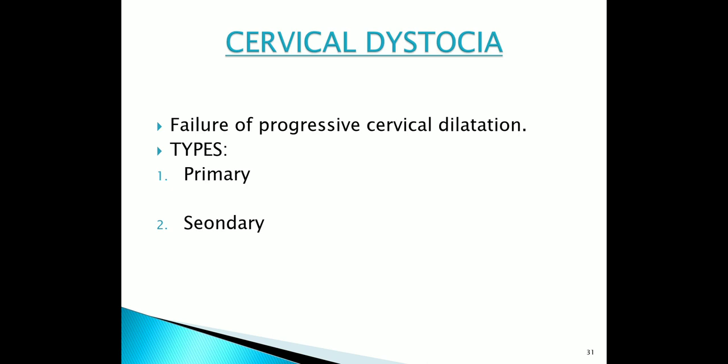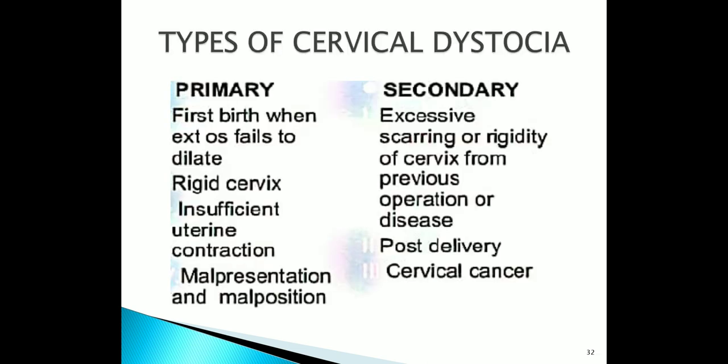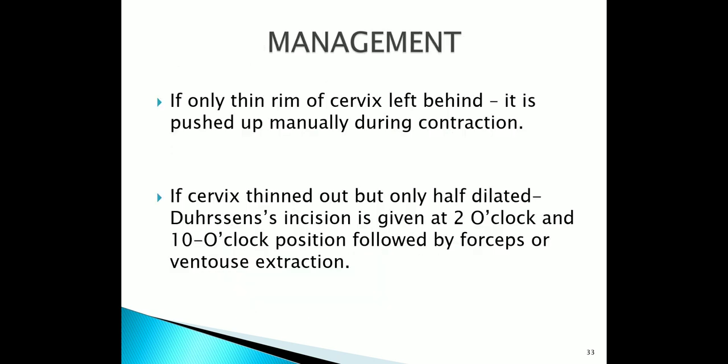Now come to cervical dystocia. Cervical dystocia means failure of progressive cervical dilatation. It is mainly of two types: primary cervical dystocia and secondary cervical dystocia. Primary cervical dystocia may be due to a rigid cervix where external forces fail to dilate, inefficient uterine contraction, malpresentation and malposition. Secondary cervical dystocia is due to excessive scarring or rigidity of cervix from previous operation or disease, post-delivery changes, or cervical cancer. Management: if only a thin rim of cervix is left, it is pushed up manually during contraction. If the cervix is thin but only half dilated, a dorsal incision is given at 2 o'clock and 10 o'clock position followed by forceps or ventouse extraction.